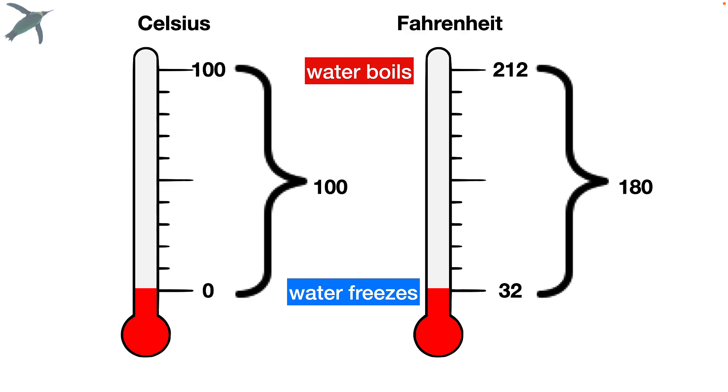Now that's the conversion factor that we need. And you'll also notice there is an offset. Zero Celsius is 32 Fahrenheit. Now keep that in mind, that 32. We're going to have to add that in when we do the conversion.